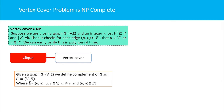The vertex cover problem is NP-complete. To prove this, first we prove that the vertex cover problem is NP — that is, it is verifiable in polynomial time. Then we reduce a known NP-hard problem to the vertex cover problem to prove it is NP-hard. Since it is both NP-hard and NP, it is NP-complete.